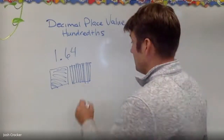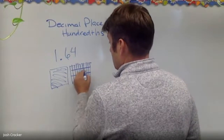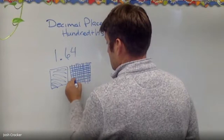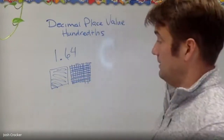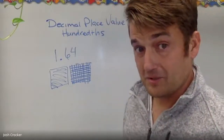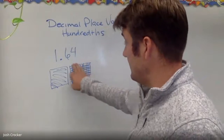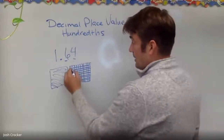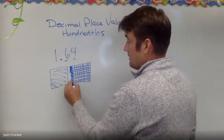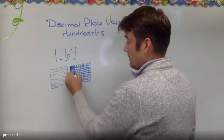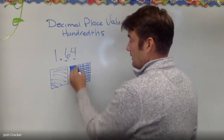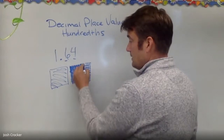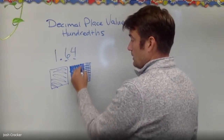Today we're taking it a step further and we're going to hundredths. That's a hundred pieces — best I could draw it. That's a hundred pieces and I have sixty-four out of a hundred. So I could color in — knowing these rows are ten each — ten, twenty, thirty, forty, fifty, sixty, and then four hundredths.